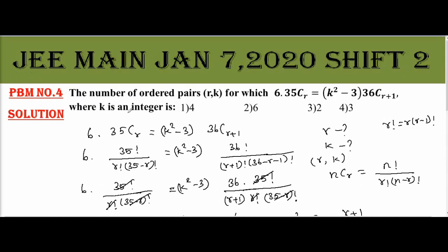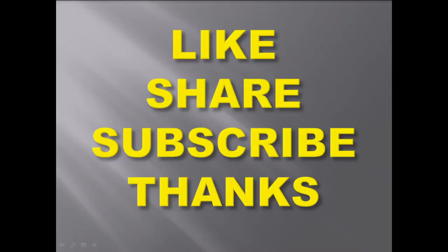Therefore the number of ordered pairs (r,k) for which this condition is satisfied is option 1: 4. If this video is useful for you, please like, share and subscribe. Thanks for watching.